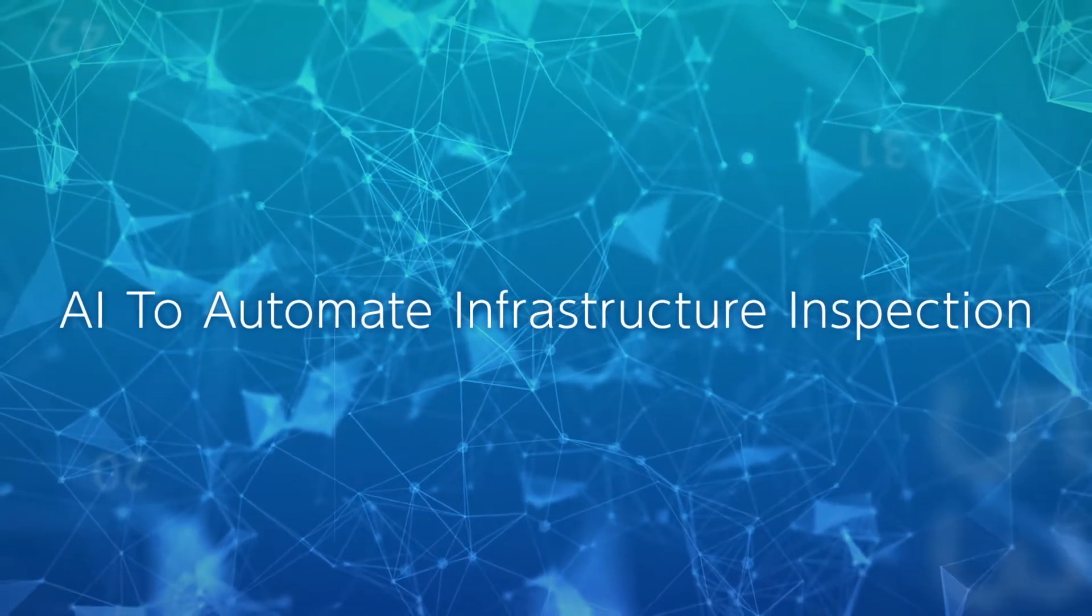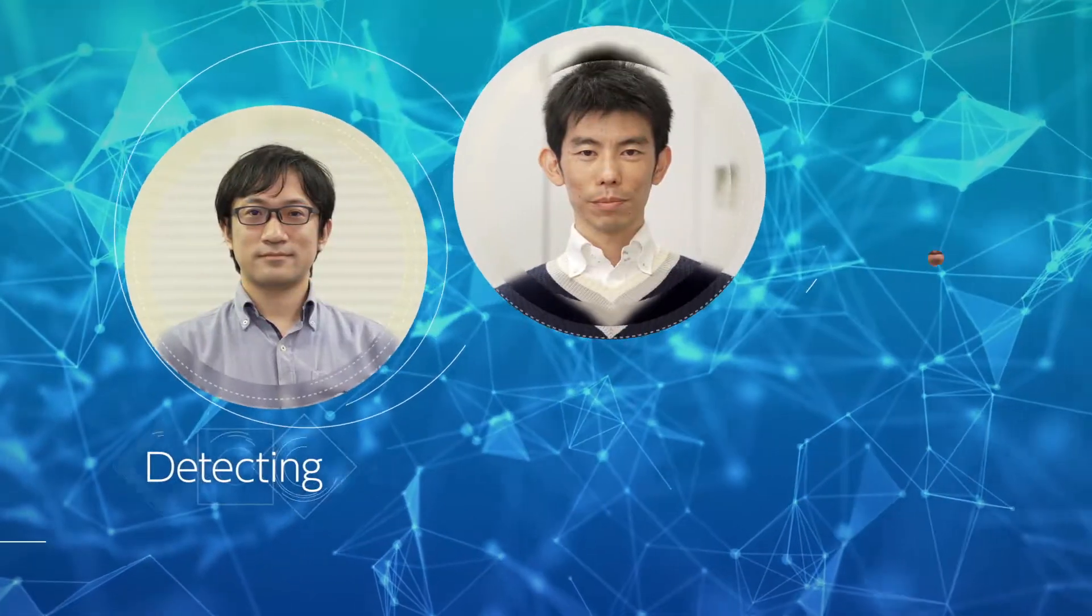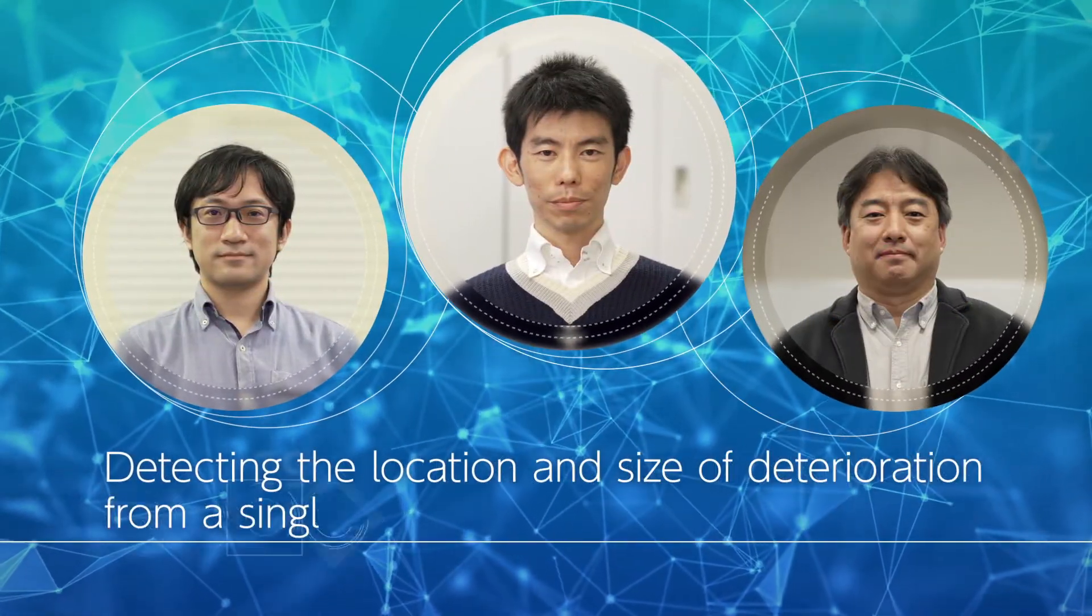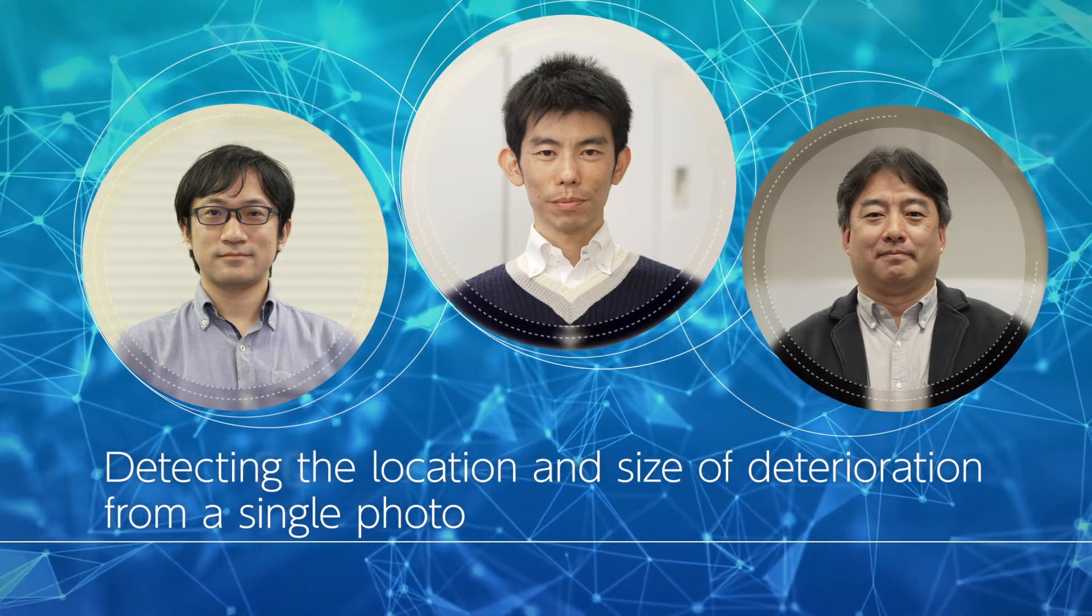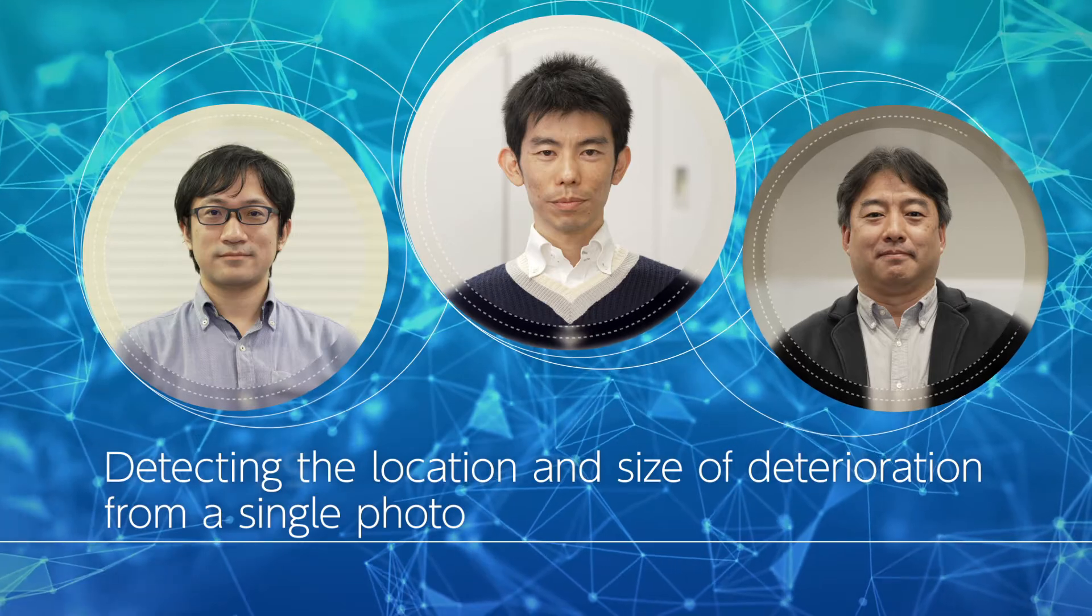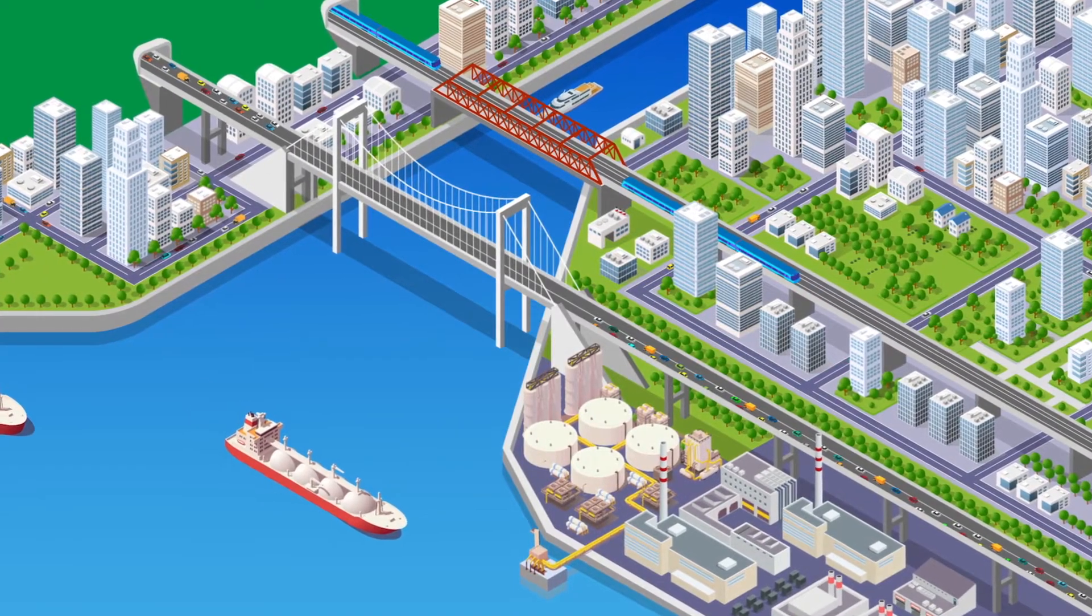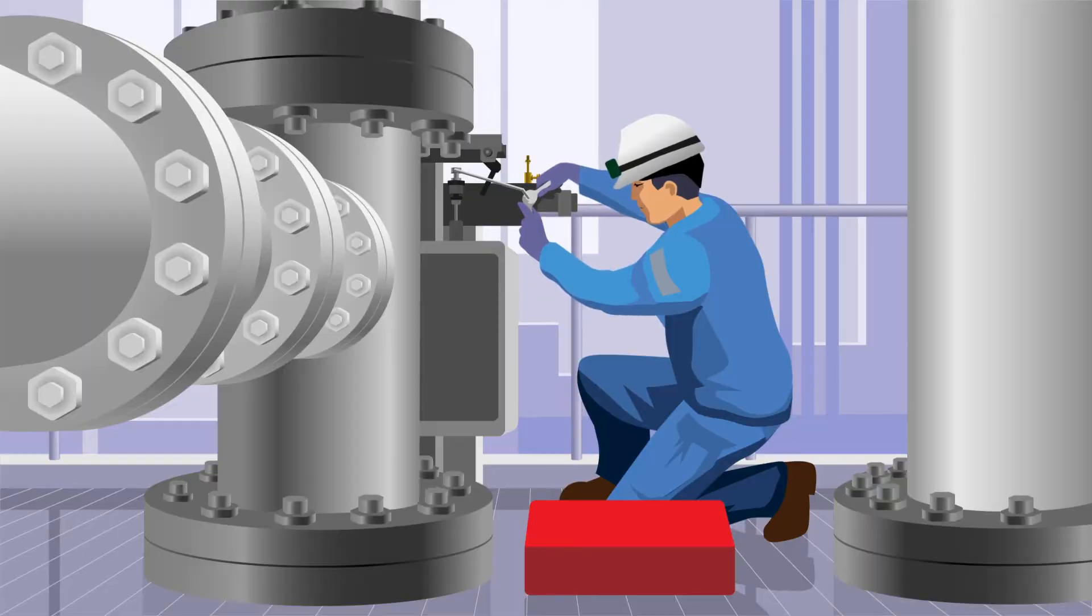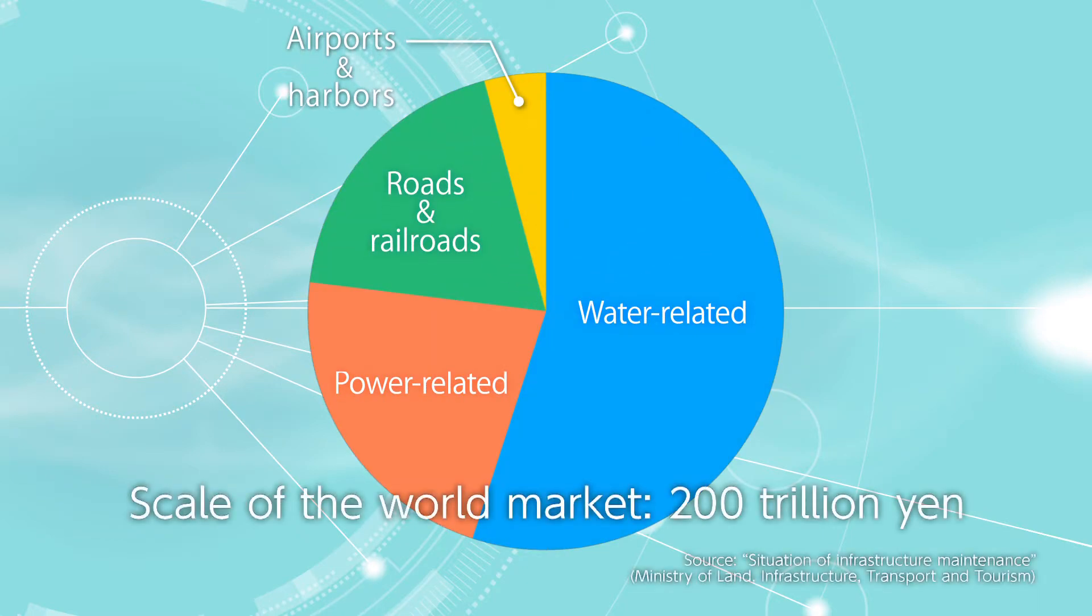AI to automate infrastructure inspection, detecting the location and size of deterioration from a single photo. Toshiba's technology for stable operation of social infrastructure. Periodic facility maintenance is indispensable, demand is very high, and the scale of the world